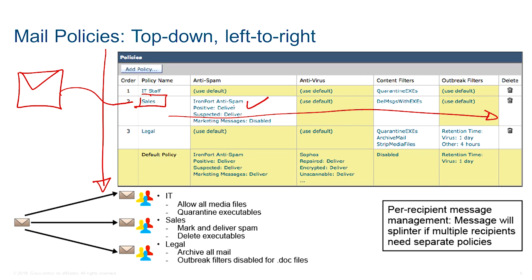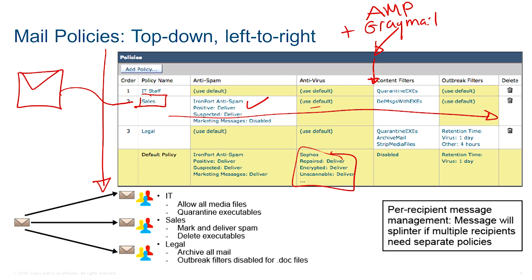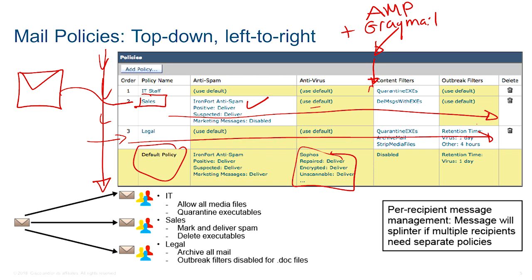The email addressed to Sales will be checked against anti-spam, antivirus using the default policy, and content filters. This screenshot would be from an older version of the ESA — older versions did not have AMP or graymail. Graymail came around version 9.5 or 9.7, so depending on your ESA version you may have two extra columns. Top-down, an email matches against one rule; if it doesn't match rules one, two, or three, it hits the default policy.